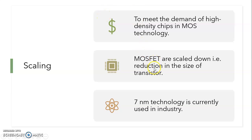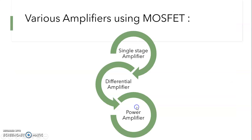Currently, 7nm technology is used in the industry. Technology refers to nothing but the size of a MOSFET. So you can imagine — a 7nm transistor size is right now used in industry for manufacturing chips.